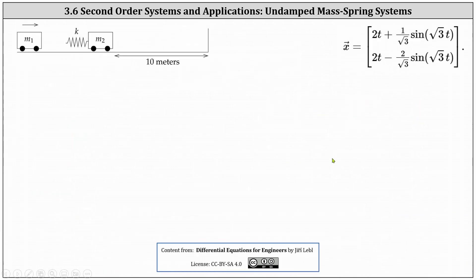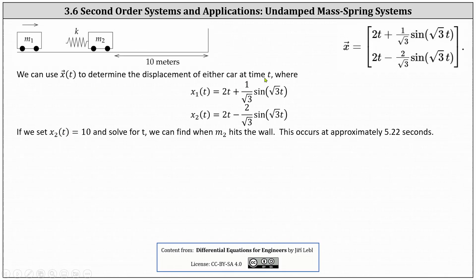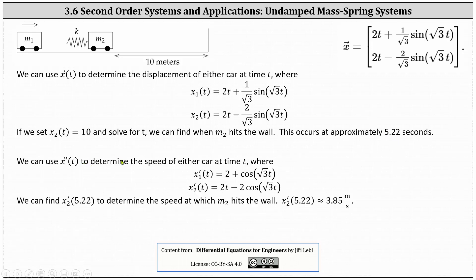We can use x of t to determine the displacement of either car at time t, where x1 of t equals two t plus one divided by square root three times sine of square root three t, and x2 of t equals two t minus two divided by square root three times sine of square root three t. Setting x2 of t equal to 10 and solving for t tells us when mass two hits the wall — this occurs at approximately 5.22 seconds. We can also use x prime of t to find the speed of either car; evaluating x2 prime of 5.22 gives the speed at which mass two hits the wall, which is approximately 3.85 meters per second.